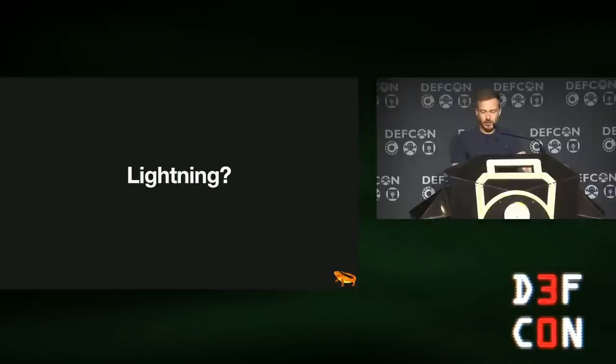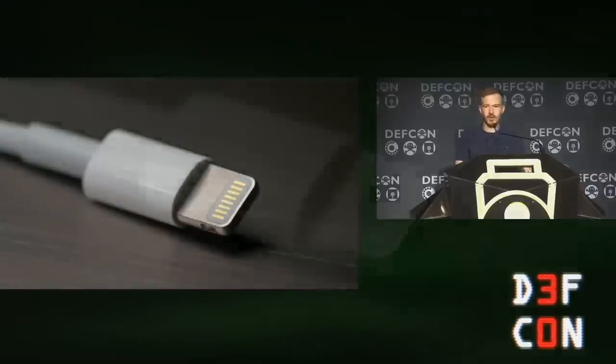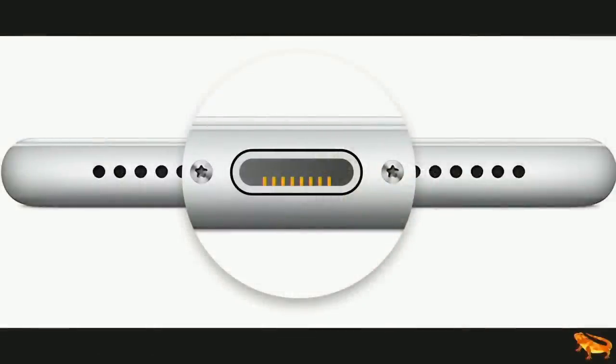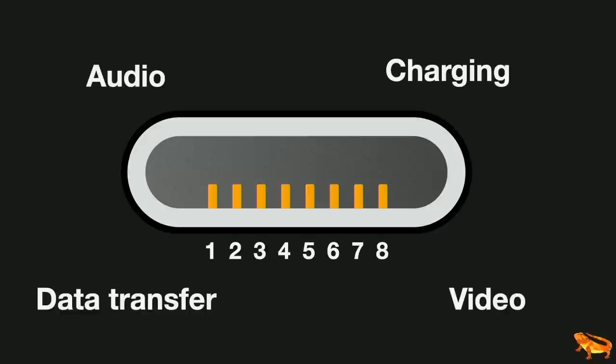Lightning - what's so special about Lightning? Lightning is this proprietary connector by Apple that you can find on iPhones. It's reversible, so it has eight contacts on both sides. However, if we look on the device side, it really only has contacts on the bottom, so it's just eight signals. If you look at the connector with the contacts on the bottom, we count them one to eight. Lightning is normally used for audio, charging, data transfer, all that kind of stuff.